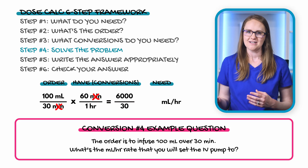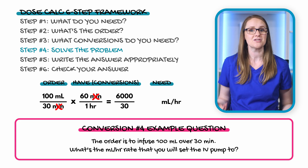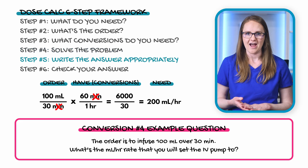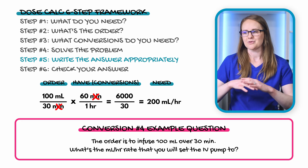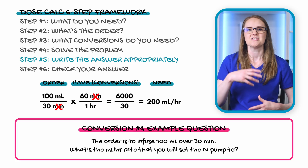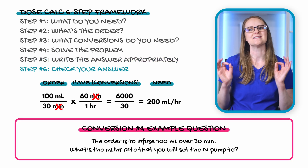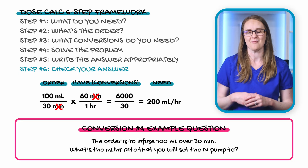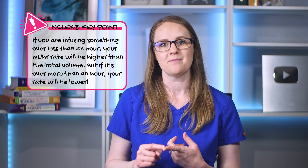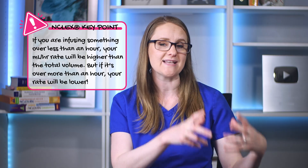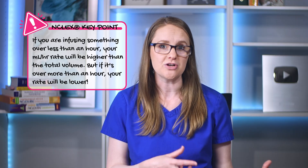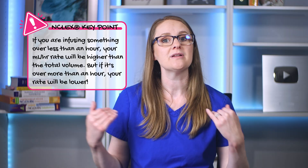100 × 60 = 6,000; 30 × 1 = 30; 6,000 ÷ 30 = 200. Step five: the answer is 200 milliliters per hour — a whole number, no rounding needed. Step six: double-check your math. An NCLEX tip: if you are infusing something over less than an hour, your mL/hr rate will be higher than the total volume. If it's over more than an hour, your rate will be lower. Use this as a sanity check.